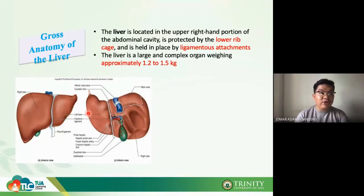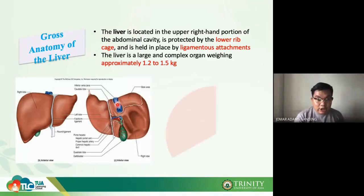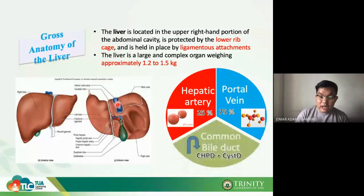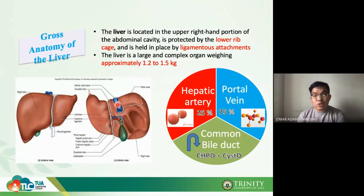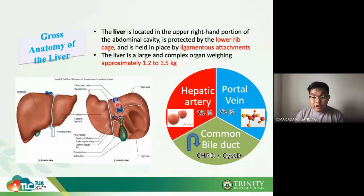The liver is a large, complex organ weighing approximately 1.2 to 1.5 kilograms. Much of your blood flows through it. You have your hepatic artery — 25% of your blood and 25% of your oxygen flows in through the hepatic artery, which carries oxygenated blood to support all aerobic processes in your liver. Your portal vein carries 75% of the incoming blood.